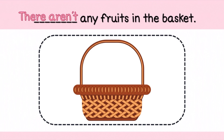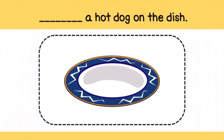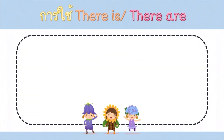เราสามารถหมายถึงผลไม้หลากหลายชนิดและหลายๆ ผลได้เลยนะคะ ต่อมาประโยค A hot dog on the dish คำว่า dish แปลว่าจาน hot dog ก็หมายถึง hot dog ที่มีลักษณะคล้ายใส่กรอกนั่นเองค่ะ ประโยคนี้เราจะเติม There isn't เพราะว่า A hot dog เราหมายถึง hot dog 1 ชิ้นค่ะ